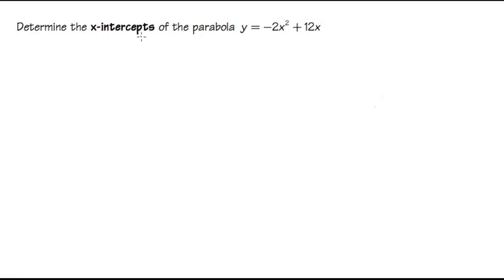We are going to determine the x-intercept of the parabola y equals negative 2x squared plus 12x. Whenever we're trying to find the x-intercept, we have to first let y equal to 0, and then we have to solve for x after that.